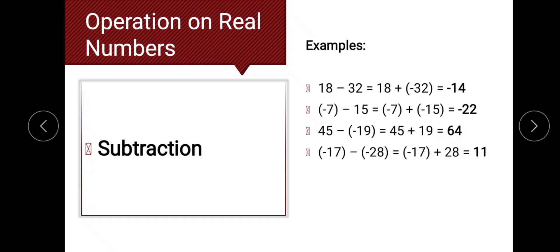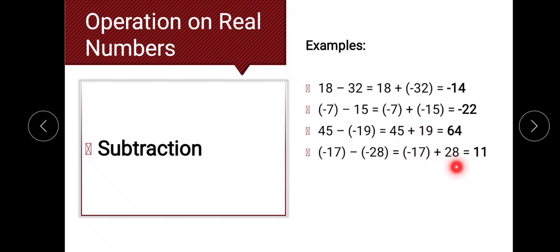Last subtraction example: negative 17 minus negative 28. Changing the sign of the subtrahend gives positive 28, and proceeding to algebraic addition gives negative 17 plus 28. We have different signs, so we subtract the absolute value of 17 from 28, which gives 11. We attach the sign of the larger number, so the answer is positive 11.